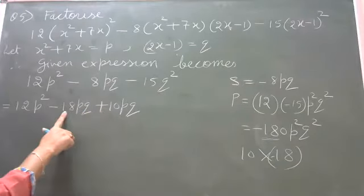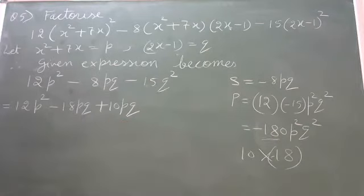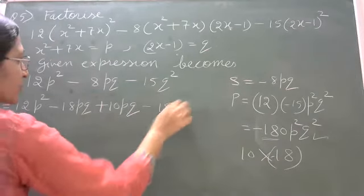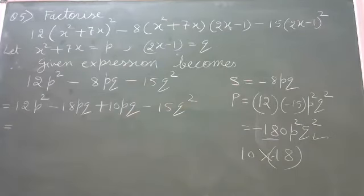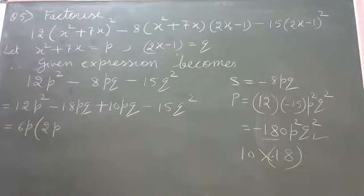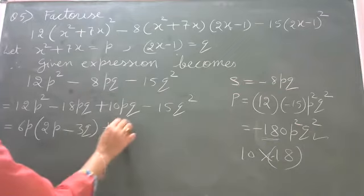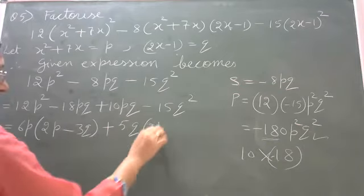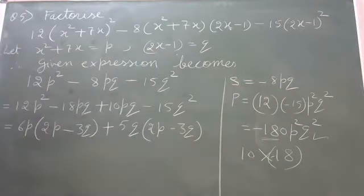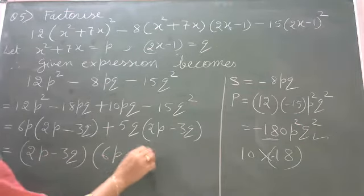Now group and factor: from the first two terms, 6p is common giving 6p into 2p minus 3q. From the last two terms, 5q is common giving 5q into 2p minus 3q. So 2p minus 3q is common in both, giving 2p minus 3q into 6p plus 5q as the factors.